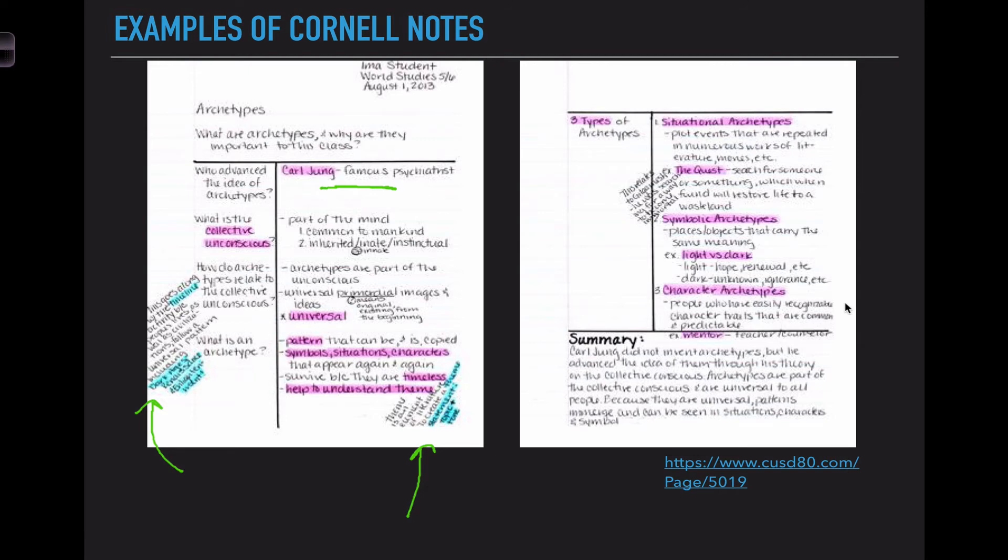When you look at the second page notice that she has the three types of archetypes listed here as the key idea. Then she highlighted the main ideas or main archetype titles and only highlighted the very important information. She's not highlighting everything on this slide. And again at the bottom, since she didn't have a summary on the first page, her summary section is slightly larger than previously.